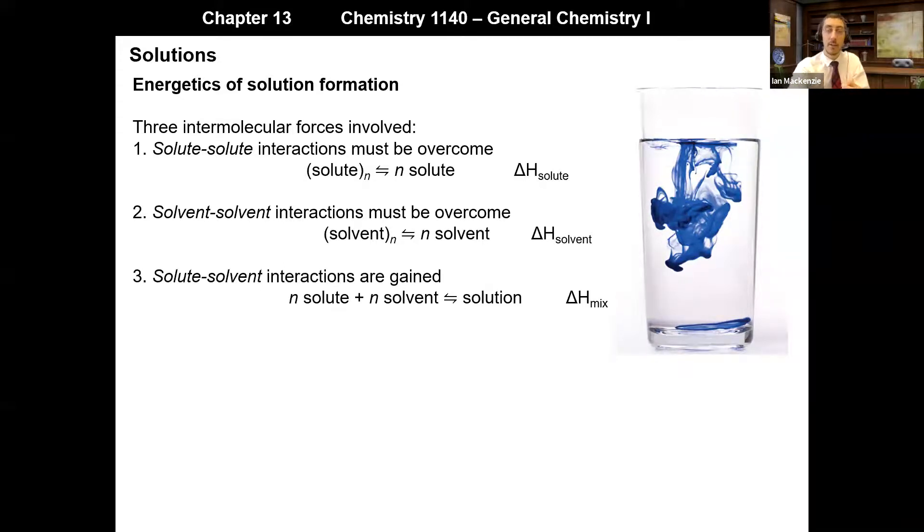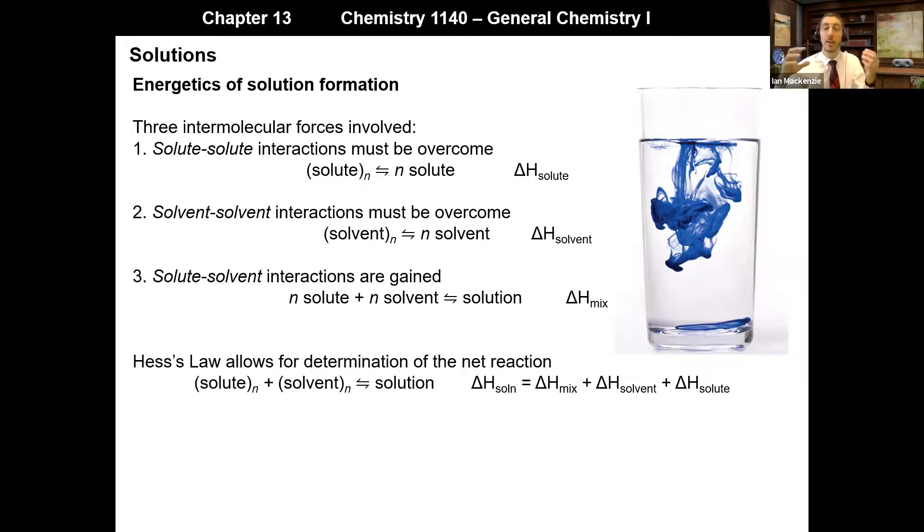Now if we take our knowledge from chapter five and apply Hess's law to this expression, to these three constituent reactions, we can actually sum them to get a net reaction for making a solution, and that's taking solute and solvent and adding them together to form our solution. And then the enthalpy for solution formation is the sum of the enthalpy of mixing, plus the enthalpy of the solvent disrupting the solvent interactions, plus the enthalpy of disrupting the solute.